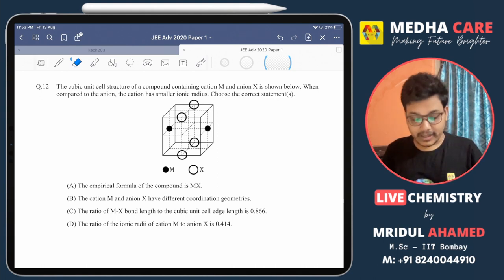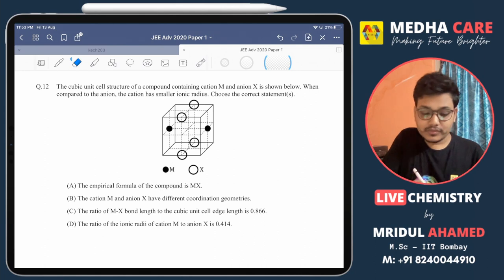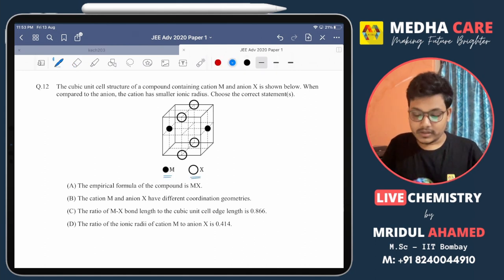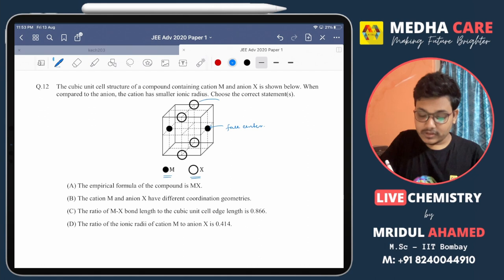The first option says the empirical formula of the compound is MX. If you see the atom M atoms and X atoms, the position of M atoms is on the face center, and the atoms X are on the edge center.